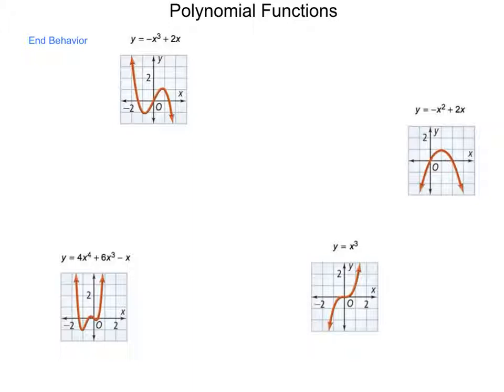It might have none. Odd functions will always have the option of no turning points. Even functions have to have a minimum of one. And the reason for that is a second concept called end behavior.